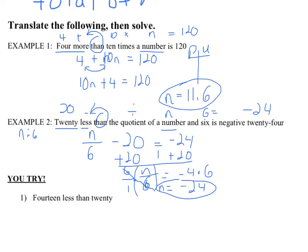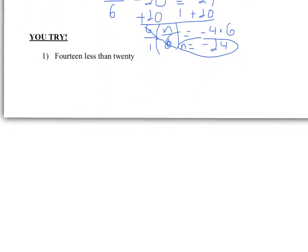Do the next one. '14 less than' — loop on 'than.' So we've got to switch these. It's not 14 minus 20; it's 20 minus 14. Now, do we have an equals sign here? The answer is no — there's nothing that says 'is,' 'is equivalent to,' or 'totals.' So this is just an expression. That's it.